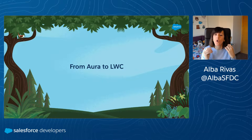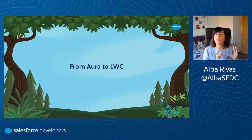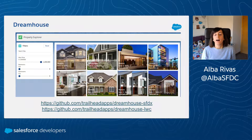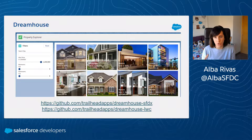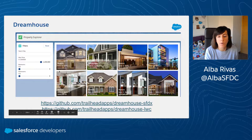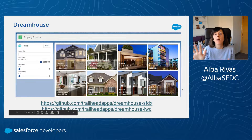Let's go into our presentation. Let's start talking about which concepts an Aura developer needs to know to make the move to LWC successfully. For that, we are going to use a sample app. We have many apps in our sample app gallery. This app was created around 2014 when Aura was released, and then it was rewritten into Lightning Web Components. So we have a repo with the Aura version and another repo with the Lightning Web Components version, which means you can do the comparison side-by-side and look at the differences in the code.